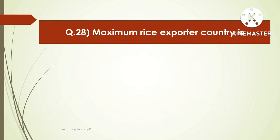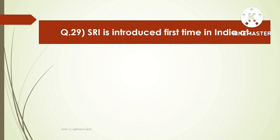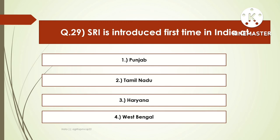The next question is: the maximum rice exporter country is — options are USA, China, India, or Thailand. The right answer is Thailand. Thailand is the maximum exporter of rice. The next question is: the SRI system was introduced for the first time in India in which state? Options are Punjab, Tamil Nadu, Haryana, or West Bengal. The right answer is Tamil Nadu.